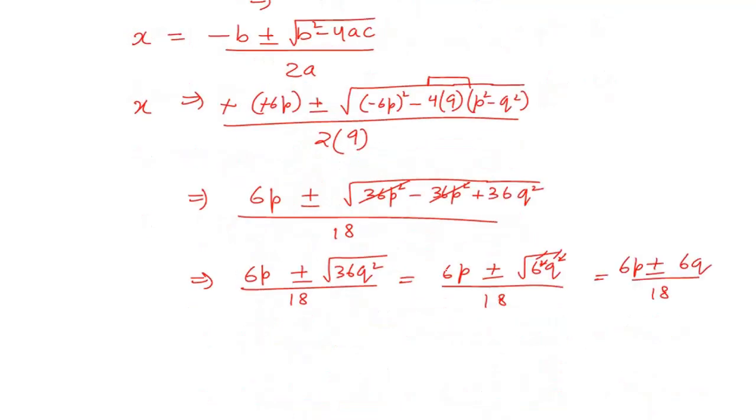Now from the numerator you can take 6 common and you get (p ± q) over 18, and 6 and 18 can be cancelled.